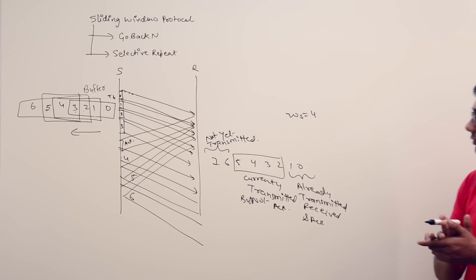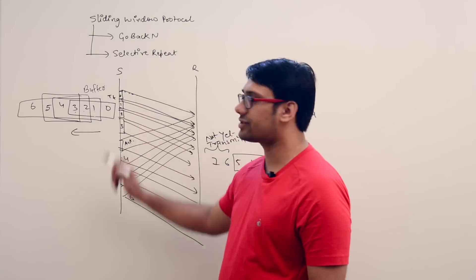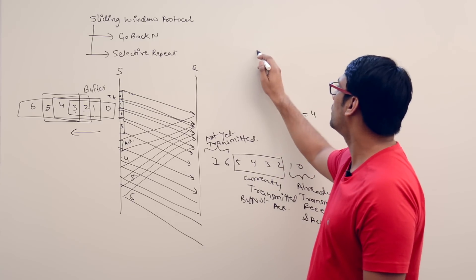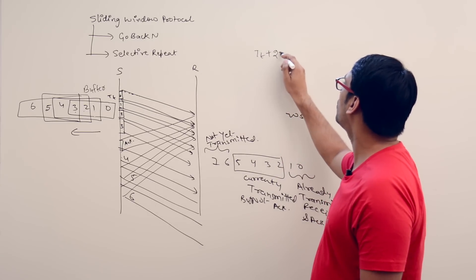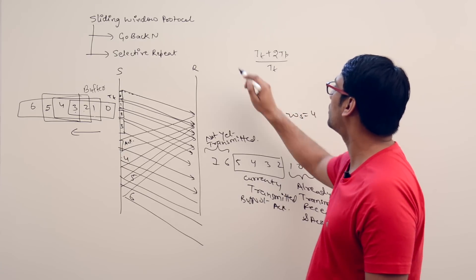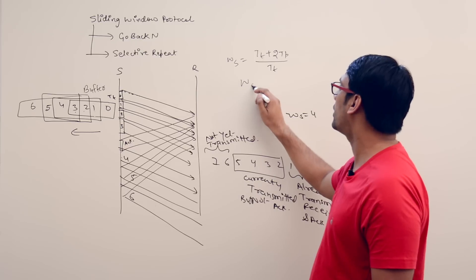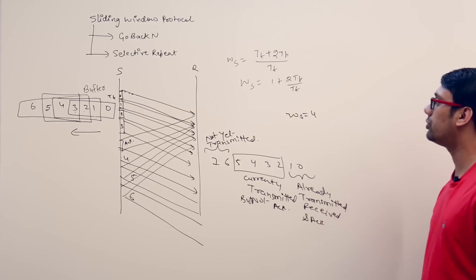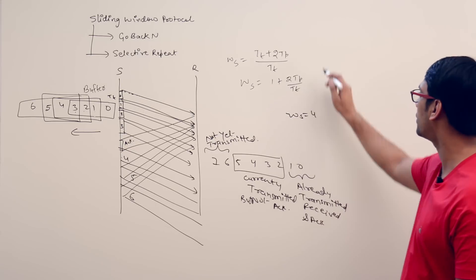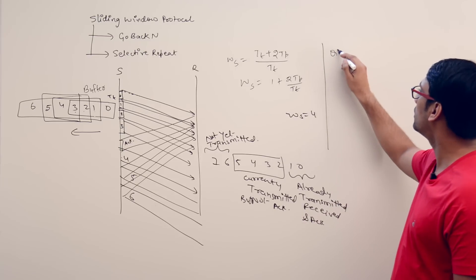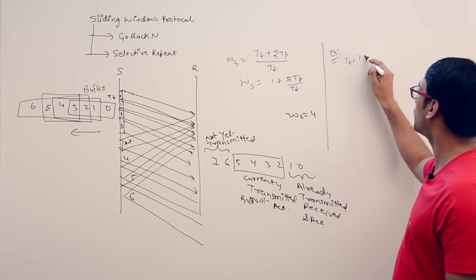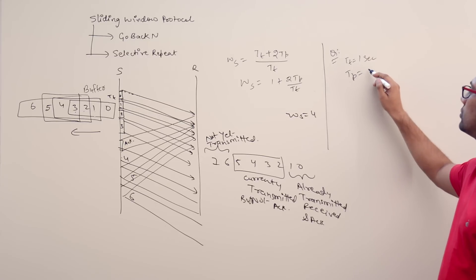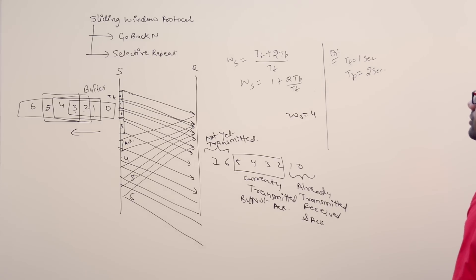In the previous video we discussed what the size of the sliding window should be. To get 100% efficiency, we should transmit (Tt + 2 * Tp) / Tt packets, which is the window size. We can also write it as: window size = 1 + 2 * Tp / Tt. For example, assume the transmission time Tt is 1 second and the propagation time Tp is 2 seconds.